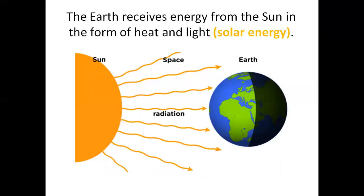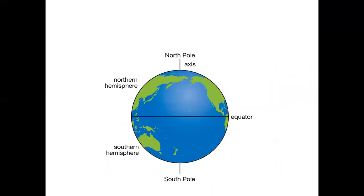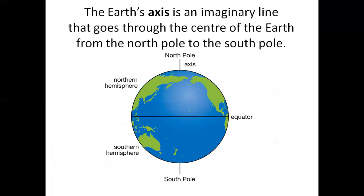The Earth receives energy from the Sun in the form of heat and light, solar energy. The Earth's axis is an imaginary line that goes through the center of the Earth, from the North Pole to the South Pole.